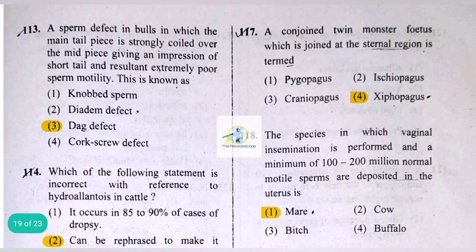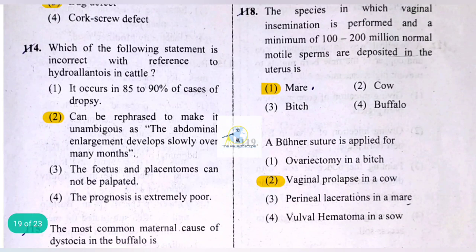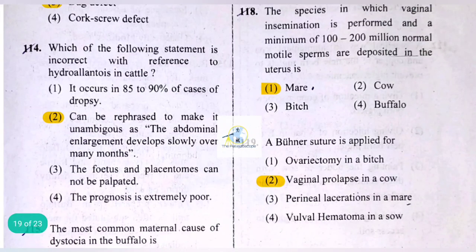A sperm defect in bulls in which the main tailpiece is strongly coiled over the mid-piece, giving an impression of a short tail and resulting in extremely poor sperm motility, is known as the dag defect. Regarding hydroallantois in cattle, the statement that abdominal enlargement develops slowly over many months is incorrect.